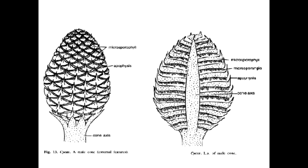Today we will discuss the external features of Cycas, including microsporophyll and apophyses. The male cone is terminal and shortly stalked, compact and large, conical in shape, and consists of a central cone axis around which numerous microsporophylls are spirally arranged.